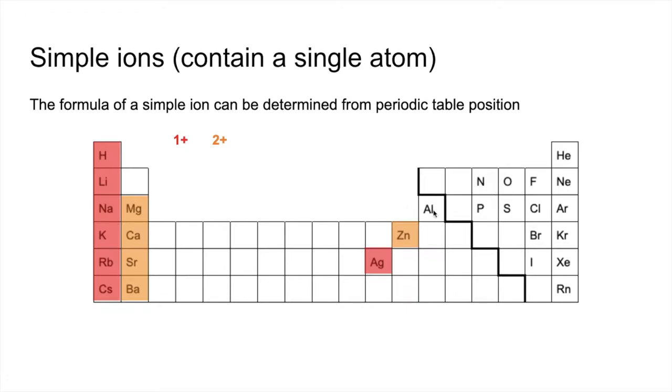And the only member of group three that we're going to worry about is aluminium. And that forms a 3 plus ion. So it loses its 3 outer electrons, valence electrons, and becomes a 3 plus ion.